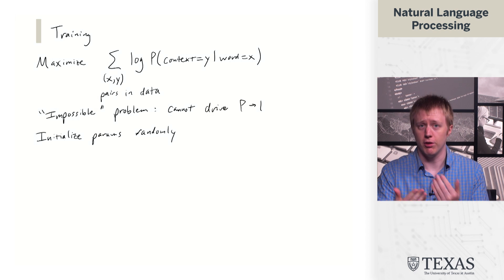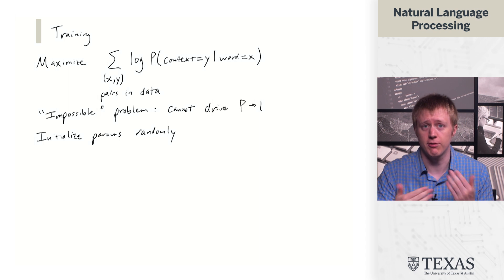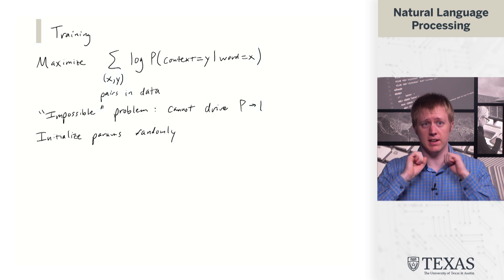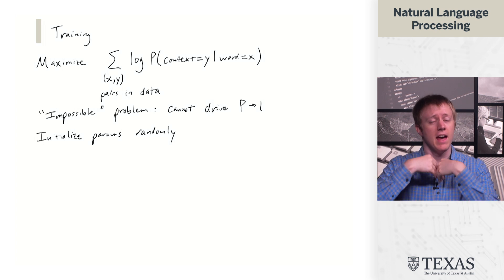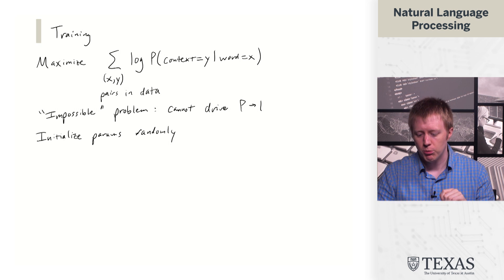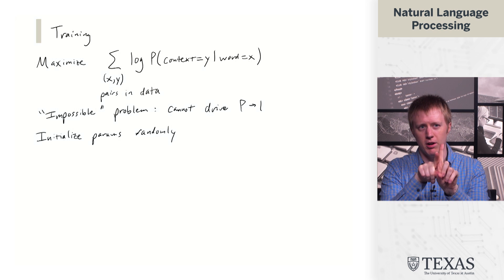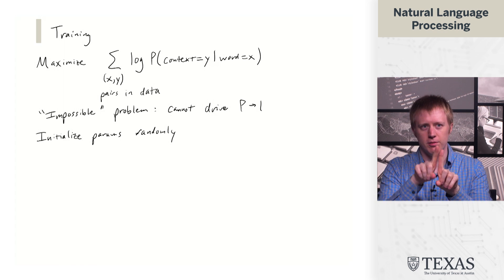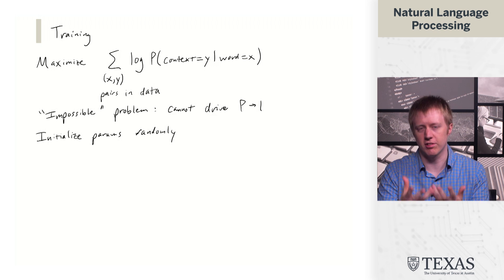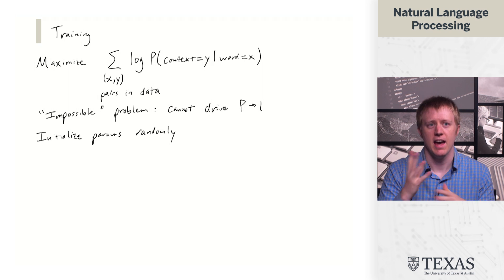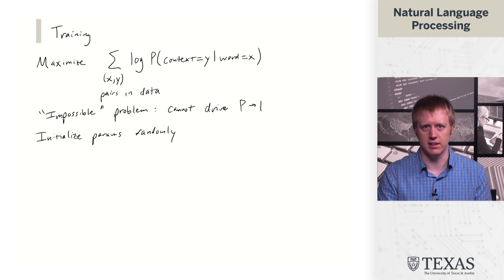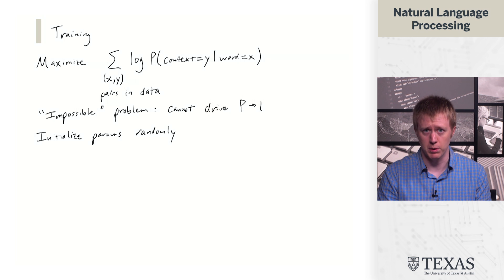And the last thing I'll point out here is that we are going to initialize our parameters randomly. So again, we've talked about for neural networks how important it is to have good initialization. Here we're just going to kind of throw out some random vectors and then iterate over this data. And what happens roughly is that the model is going to kind of pull similar vectors together over time because they're going to be seen in similar contexts. And optimizing this objective is going to give us vectors of the sort that we want.